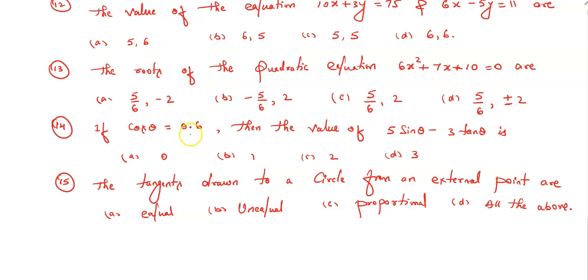Question number fourteen: if cos θ equals 0.6, then the value of 5 sin θ - 3 tan θ is: option a) 0, option b) 1, option c) 2, option d) 3. You have to select which is the correct answer.